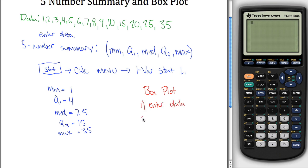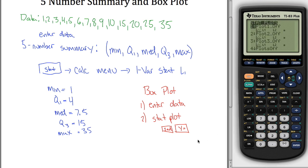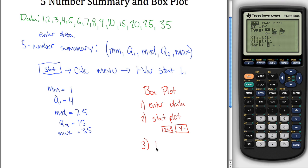And the second thing you want to do is go under the stat plot menu. So let's say stat plot, which you can get to by hitting second and then y equals up here. So I hit second and then y equals. And then the third thing we want to do is go into one of these, so I'll just go into the first one here. Turn it on. Program box plot.